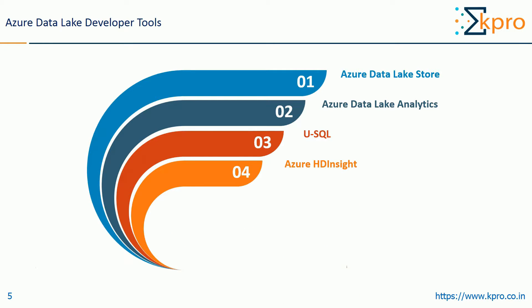Azure HDInsight: Although HDInsight is not a new cloud service, its integration into the Data Lake platform is a new development. HDInsight is a fully managed Hadoop cluster service that supports a wide range of analytic engines including Spark, Storm, and HBase. HDInsight now also supports managed clusters on Linux along with Windows-based clusters. Apache and HDInsight have been instrumental in the transformation of Hadoop from single-use or batch processing.